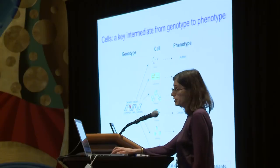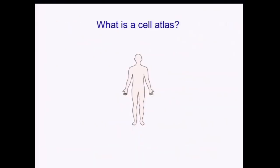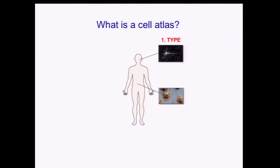It becomes completely obvious that if we actually want to functionally characterize variants and act upon them, we have to know which cells we're dealing with. So what would be incredibly handy is if we had some sort of catalog or atlas of all cells. The first thing that should be there is a listing of all of the different cell types — our neurons, our different immune cells, and so on.